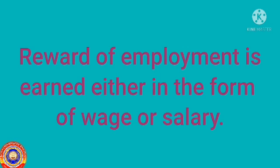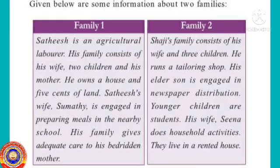Employment is one source of income for a family. Income is generated in different ways, so the sources of income are also different. Let's look at two families. The first is Sadish's family. Sadish is a farmer. His family consists of his wife, two children, and his mother. He owns a house and five cents of land. His wife works in the nearby school. His family gives adequate care to his bedridden mother.